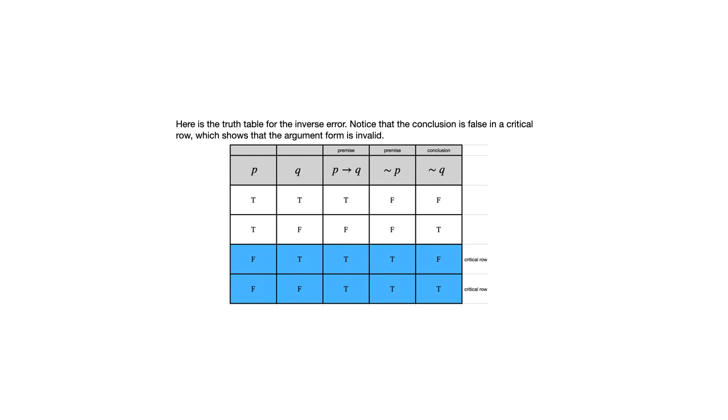Here's the one for inverse error, also happens to have two critical rows. Now you'll certainly see examples that have two or more critical rows and the argument turns out to be valid. But this is not one of those cases because we do have a false conclusion in one of the critical rows. And so that means we've got an invalid argument form.